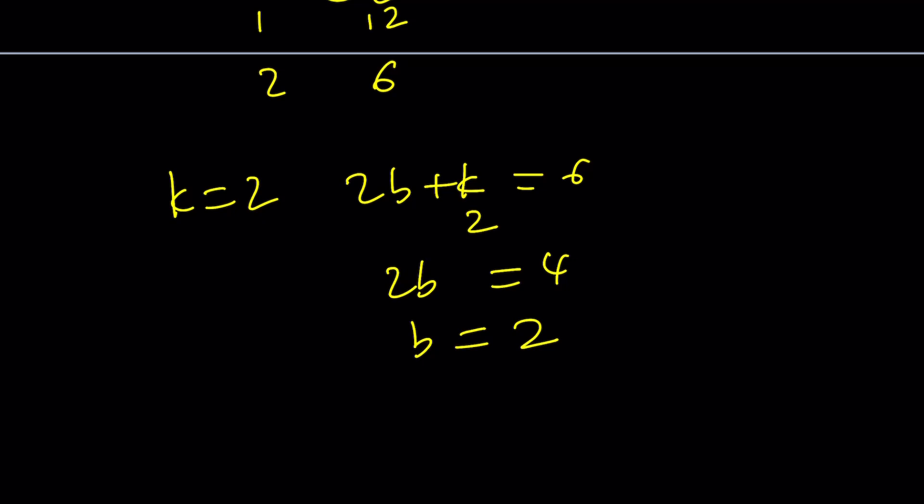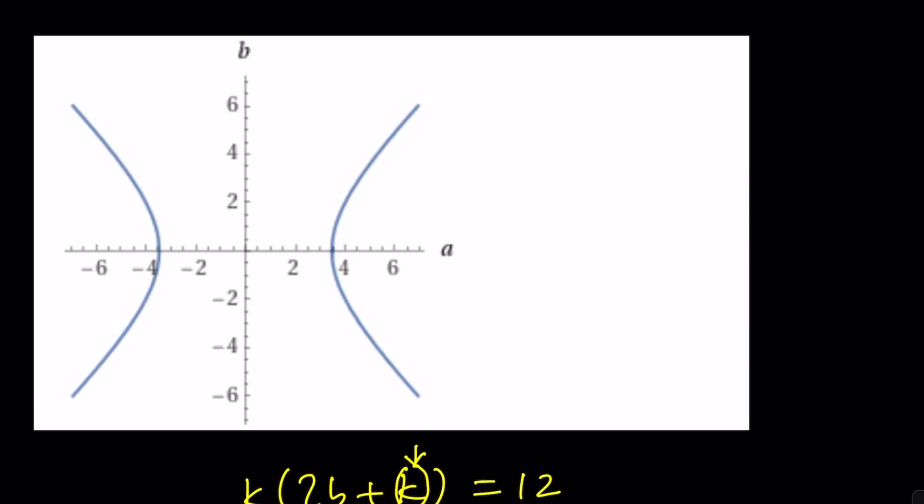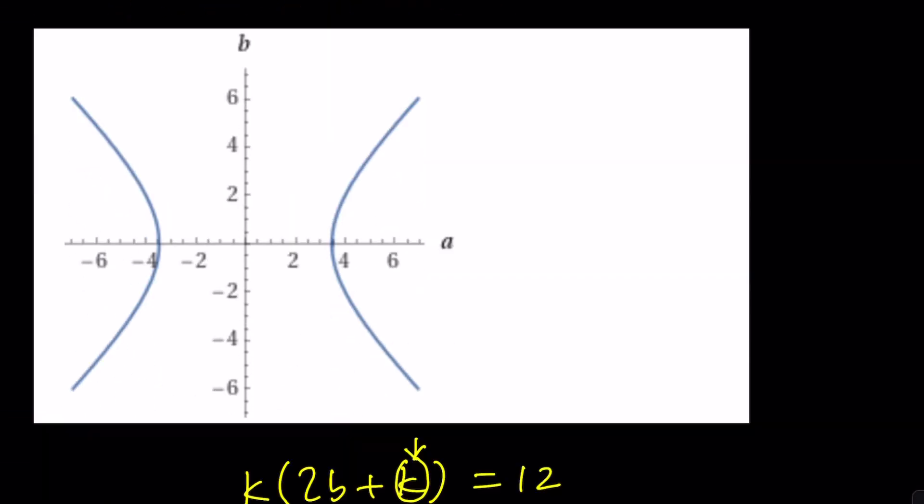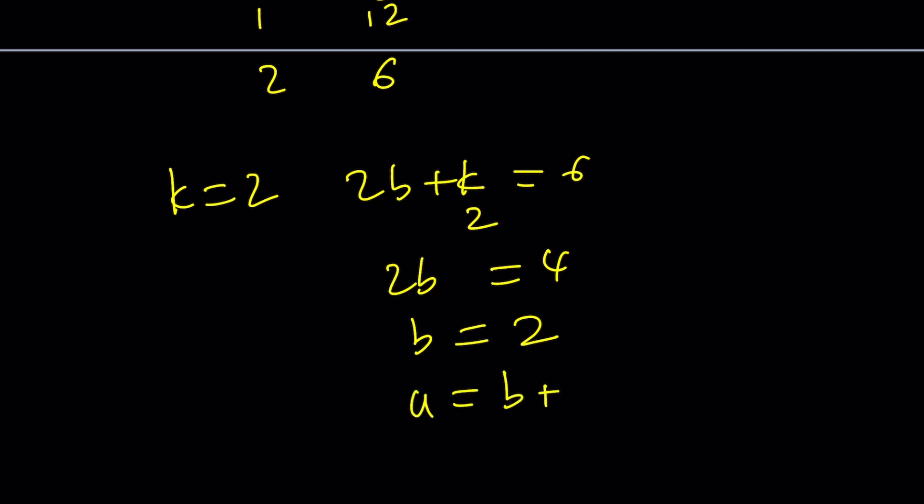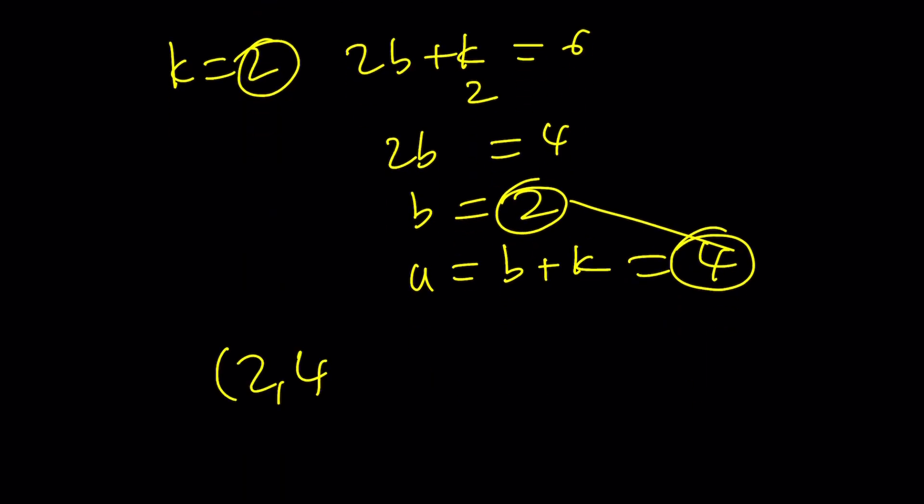But wait a minute, where does k come from? Well, we just assumed that a can be written as b + k. a is b + k, and k and b are both 2, so a is going to be 4 in this case. This basically gives us the ordered pair (2, 4).